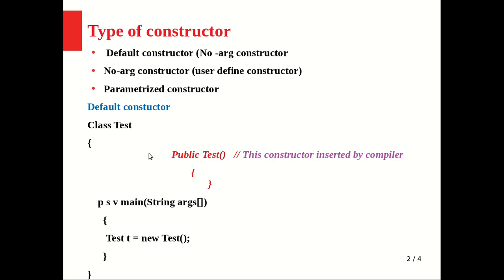The default constructor is generated by the compiler, not by the JVM. If the user does not define any constructor in a class, then at the time of object creation the compiler checks whether a constructor exists. If none is found, the compiler inserts one. This inserted constructor is called the default constructor, and it is always a no-argument constructor — never a parametric constructor.